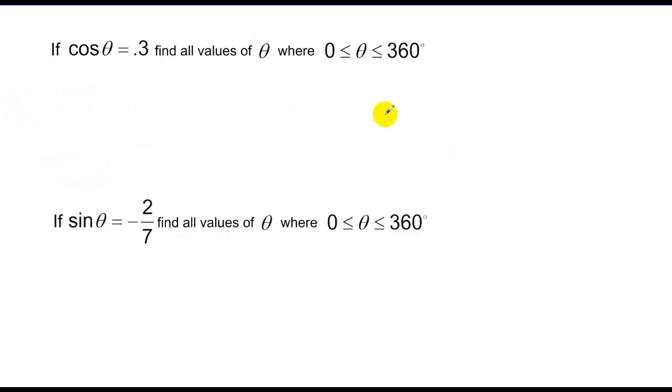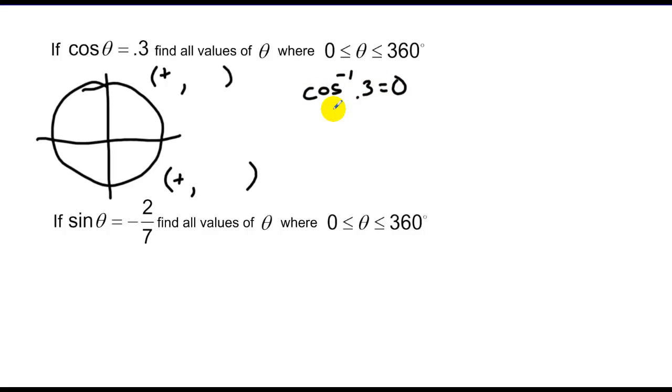Here's the same thing. We have a cosine value now of 0.3. Again here's a circle and if my cosine value is positive that's talking about my x value. So we have a positive x value in the first quadrant and a positive x value in the fourth quadrant. Then I go to my calculator and take the inverse cosine of 0.3 to get my theta value.